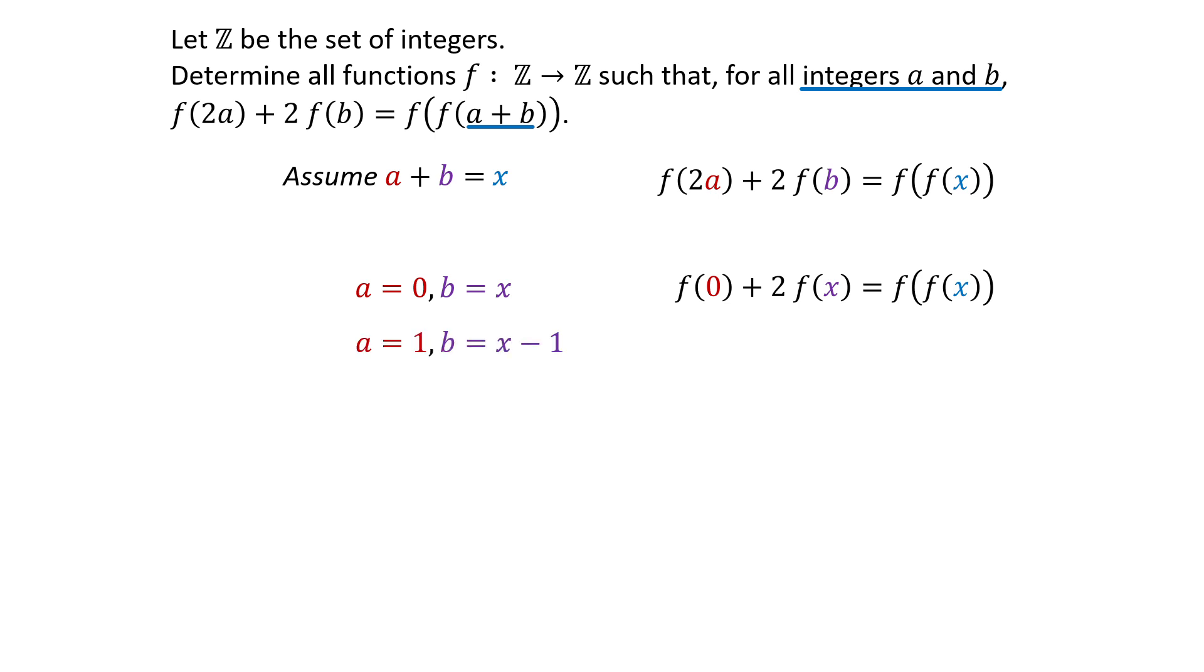When A is 1, B equals X minus 1, and we get F of 1 plus 2F of X minus 1 equals F of F of X. Now we can write F of 0 plus 2F of X equals F of 1 plus 2F of X minus 1.